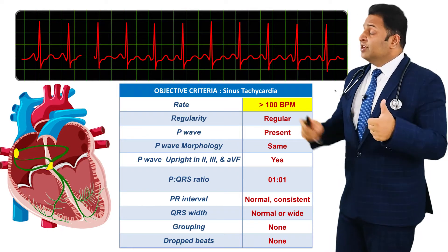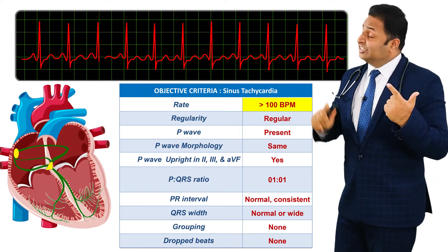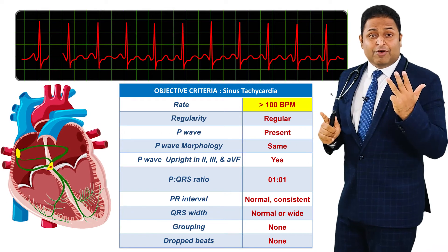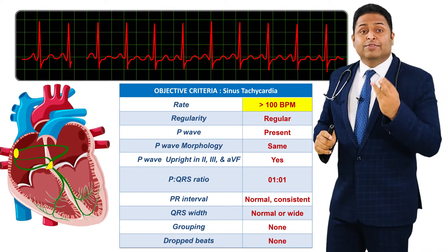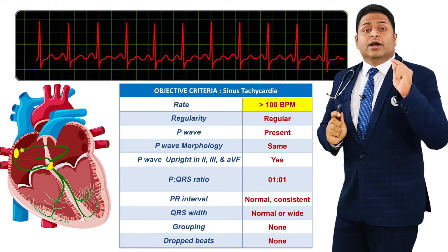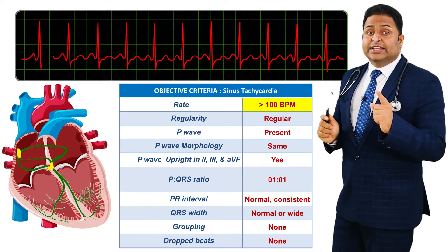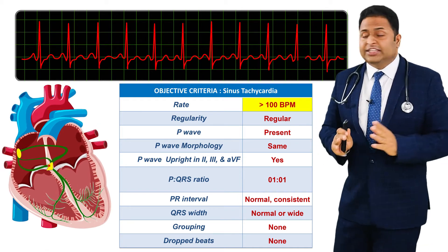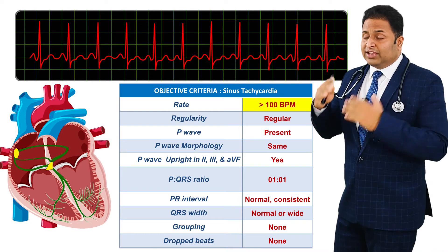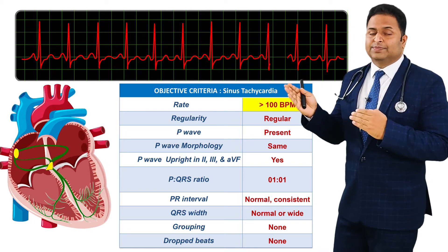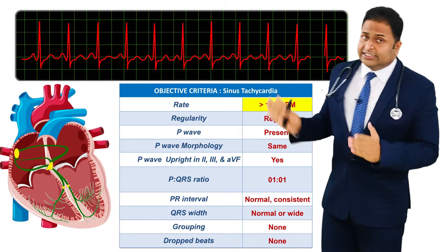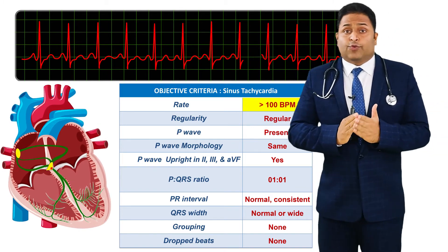The objective criteria for sinus tachycardia: Rate is more than 100 beats per minute. Regularity is regular, as it originates from the SA node. A P wave is present and morphology is the same throughout, with P waves upright in leads II, III, and AVF. P:QRS ratio is 1:1. PR interval is normal and consistent. QRS width is normal, but can sometimes be slightly wider. Grouping is none and dropped beats are not present.